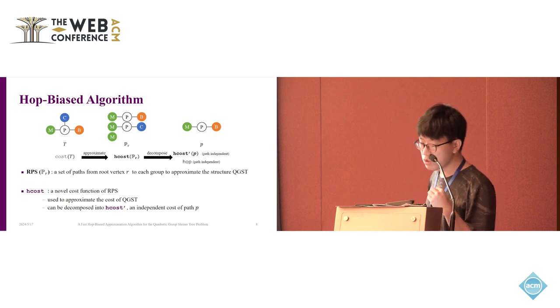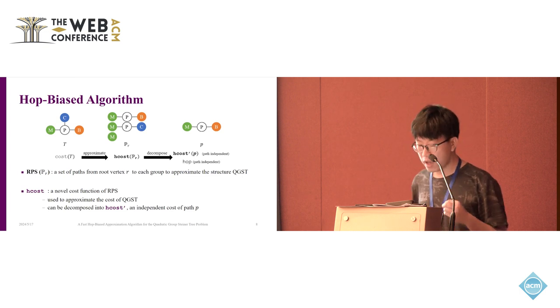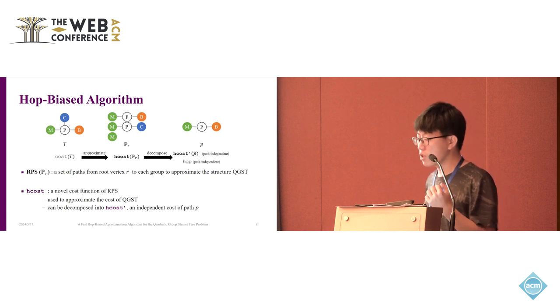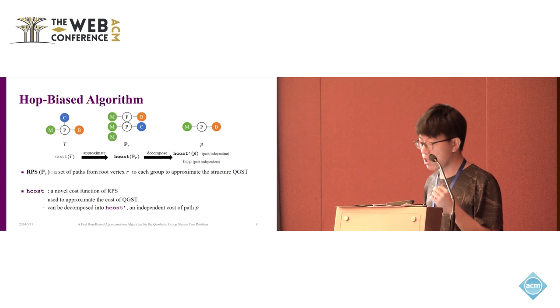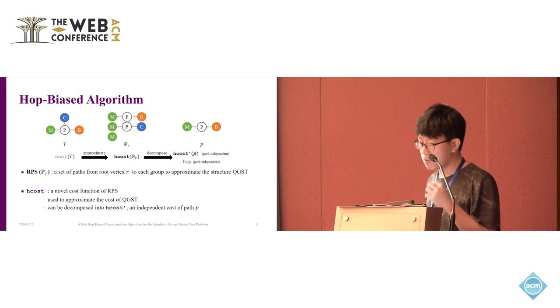We first define the RPS as the set of paths from a common root vertex r to each group. We use the RPS to approximate the structure of the QGST. So we can focus on how to search the min-cost RPS. Another important issue is how to approximate the cost of the QGST. In this paper, we propose a novel cost function, H-cost for RPS, and we use the H-cost to approximate the cost of the QGST.